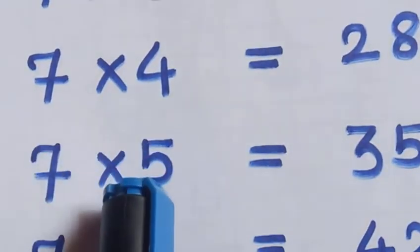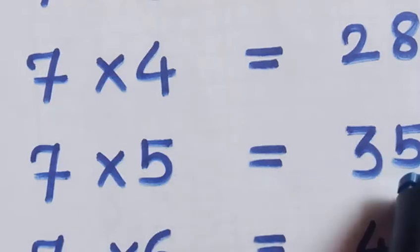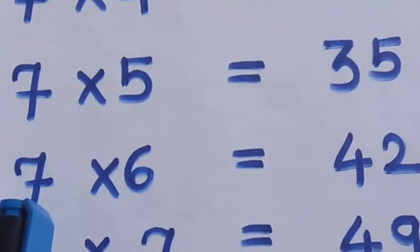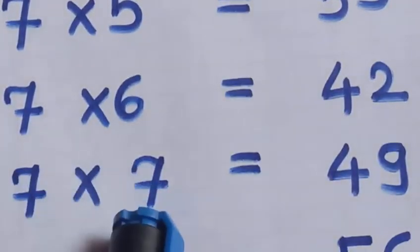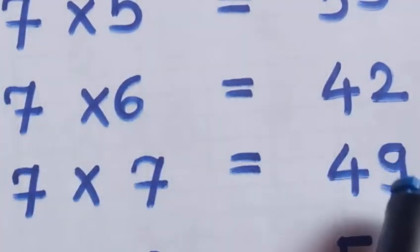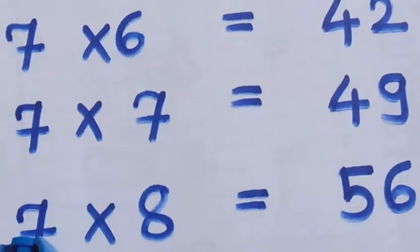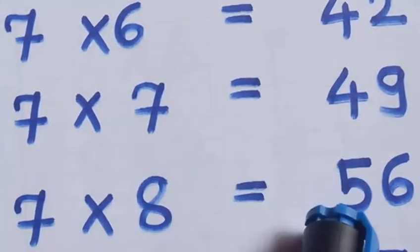7 5's are 35, 7 6's are 42, 7 7's are 49, 7 8's are 56.